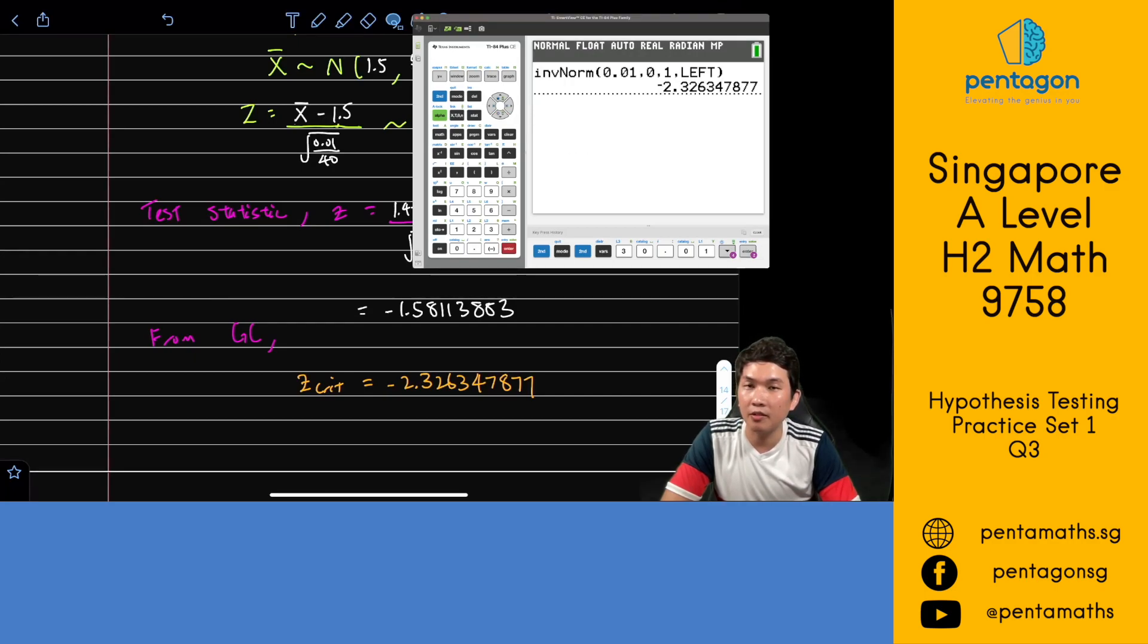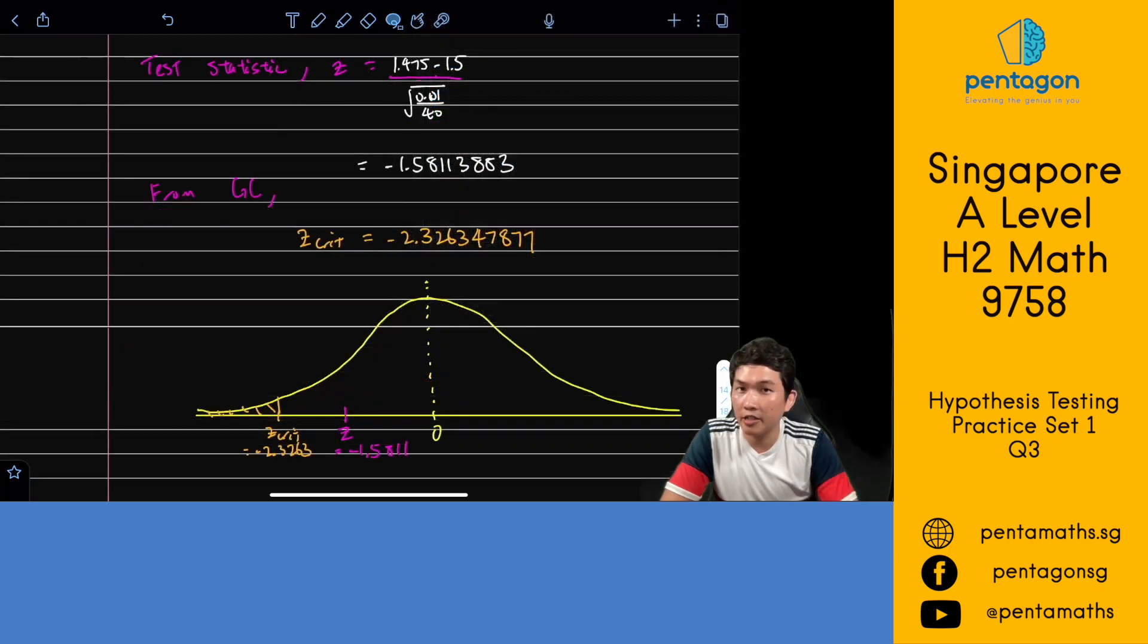Now let's do a sketch to see whether or not to reject H0. So from the sketch over here, you can see our observed test statistic is about 1.58 standard deviations to the left of the mean. Our critical region is about 2.33 standard deviations from the mean and beyond, which means our test statistic is not inside the critical region. Therefore, we will not reject H0.